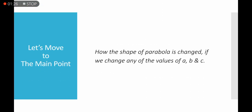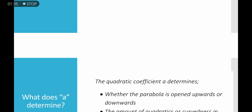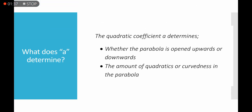Now let's look at how the shape of the parabola is changed if we change any of the values of a, b, and c. The quadratic coefficient a determines whether the parabola is open upwards or downwards, and the amount of curvedness in the parabola.